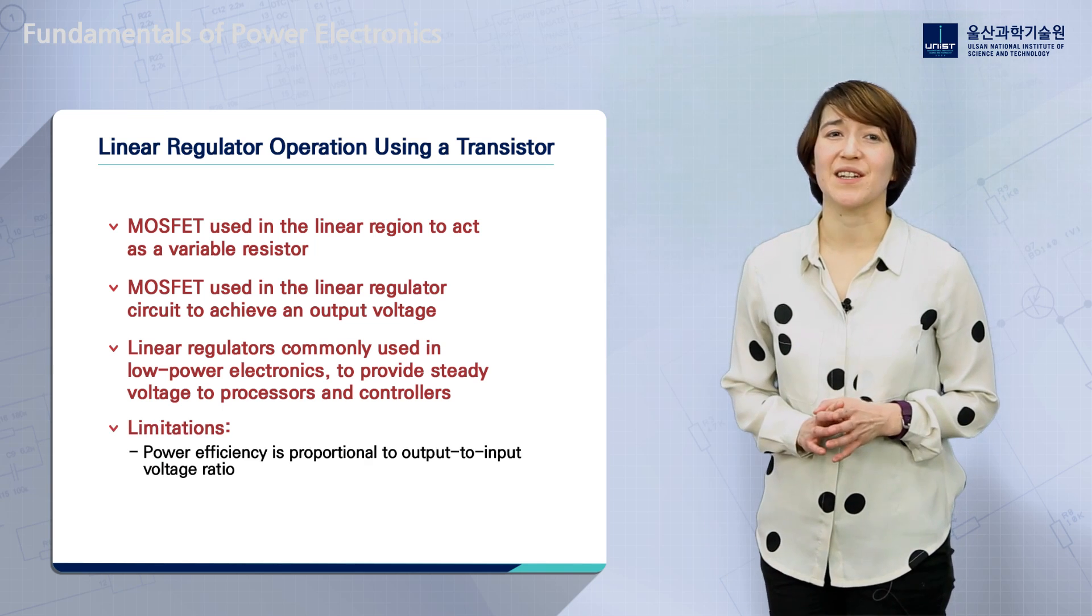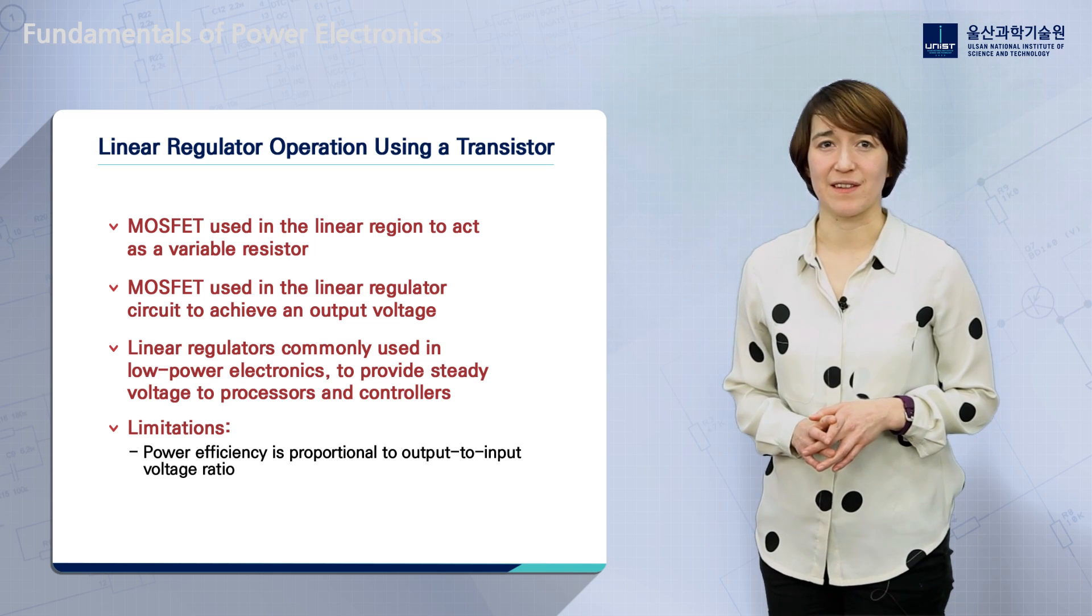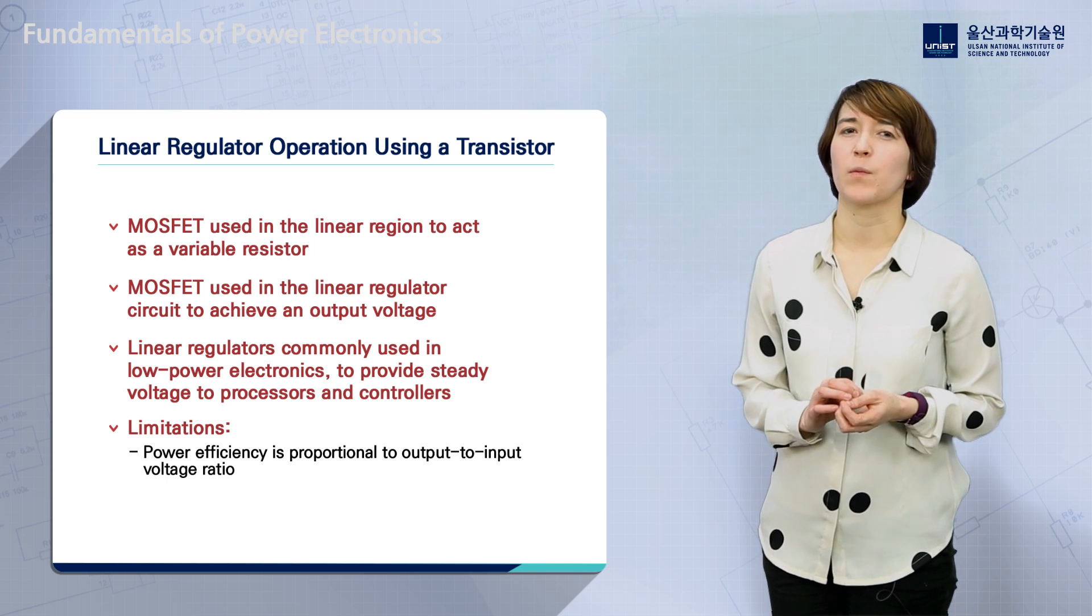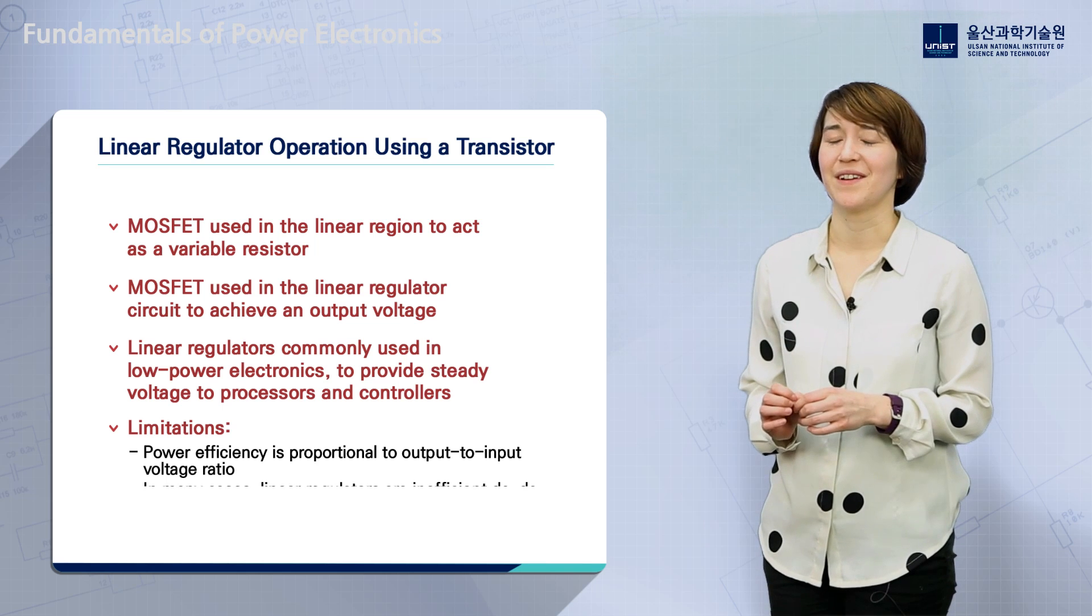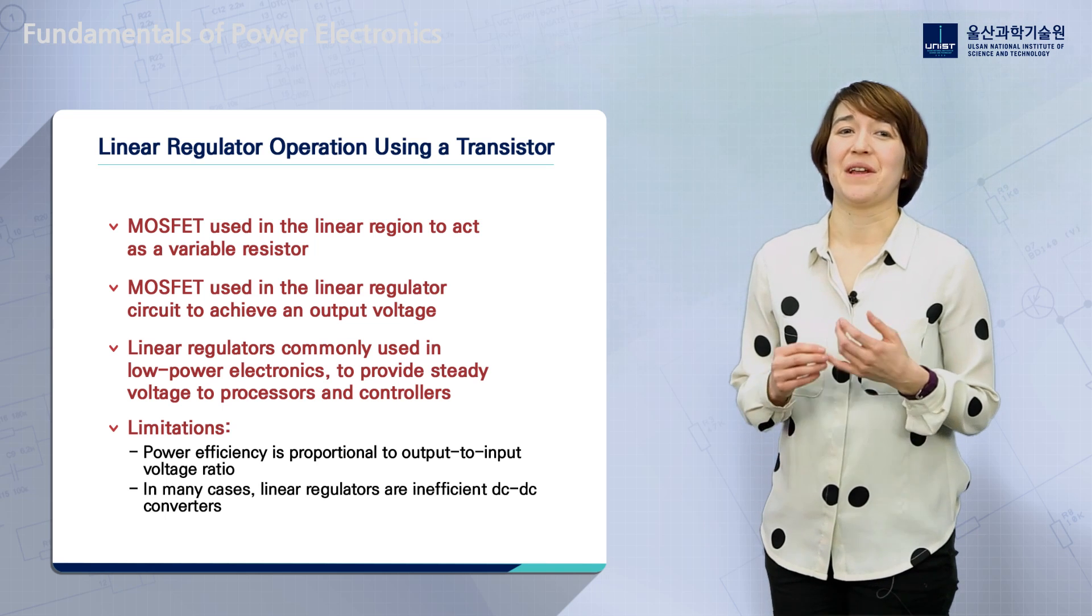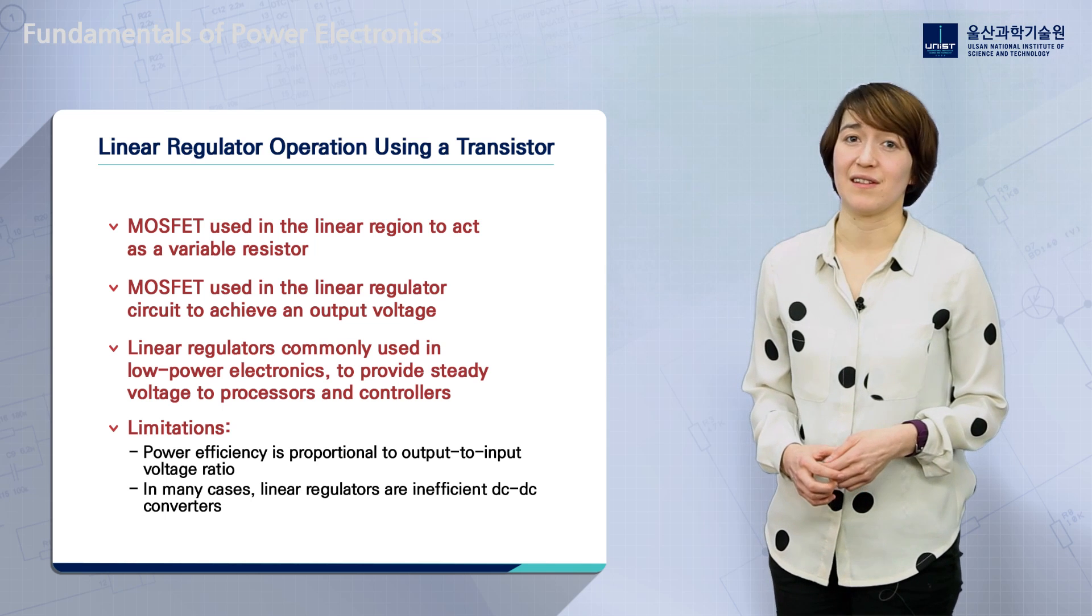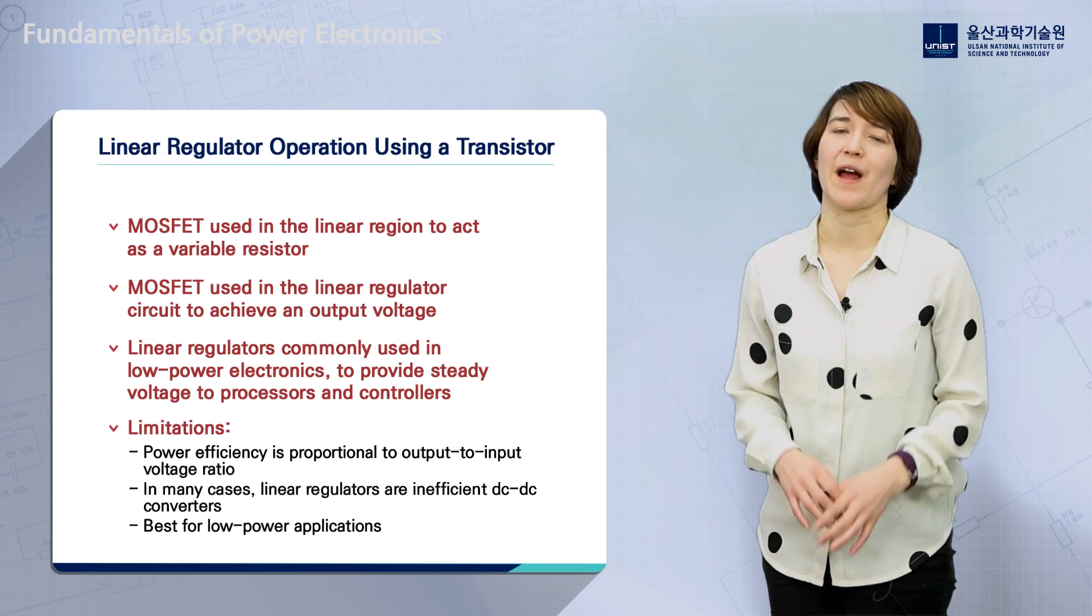One limitation of the linear regulator is that the power efficiency, the power output divided by the power input, is proportional to the output to input voltage ratio. In other words, in many cases, linear regulators are very inefficient DC-DC converters. So, they are best used in low-power applications.